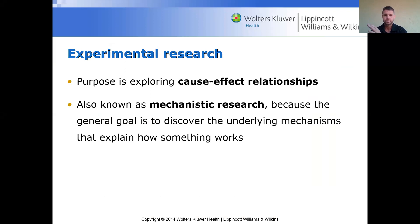Experimental research is about looking for a cause-and-effect relationship — looking for the underlying mechanisms of how something works. For example, if we're trying to figure out how diets work, we can look at different diets: ketogenic, vegan, vegetarian, normal Western diet, Mediterranean diet, and try to figure out how these diets work. We could put everyone on the same calories and see if there are differences between those diets.